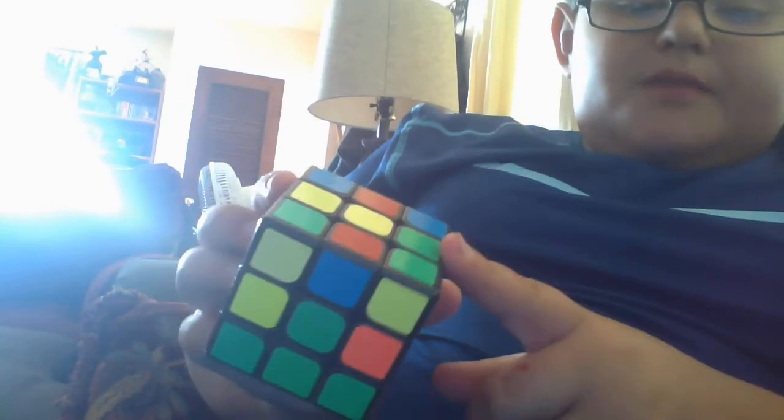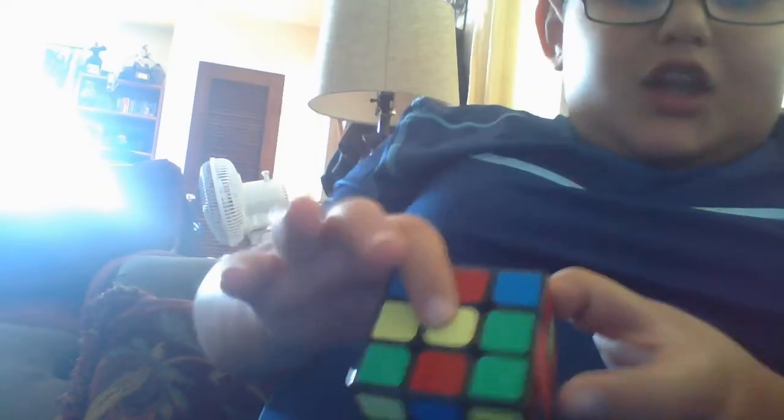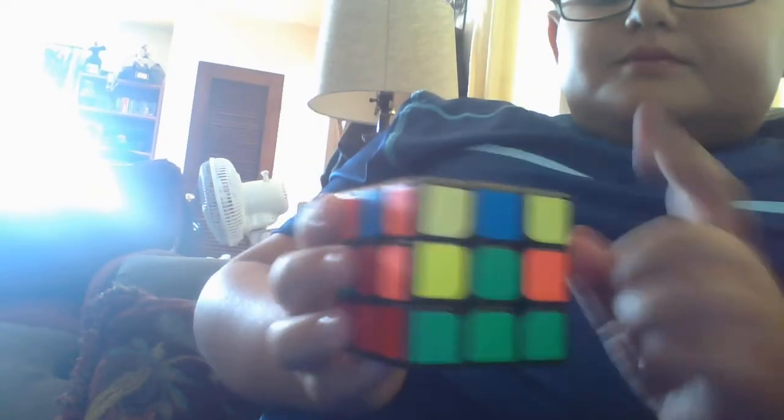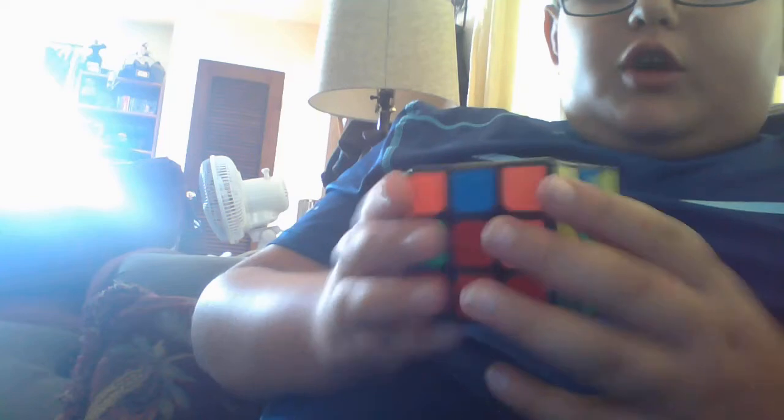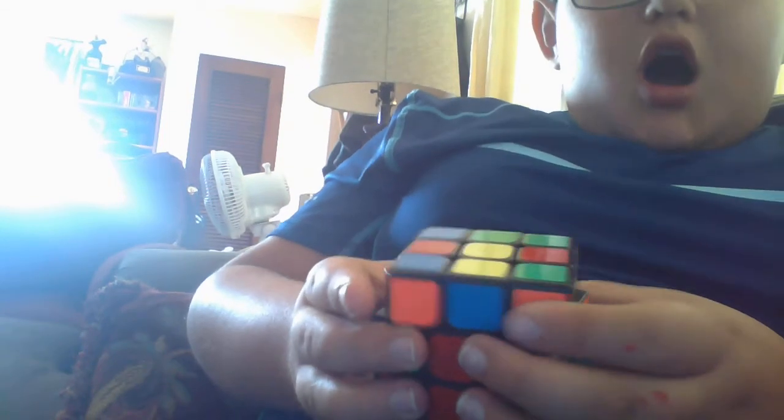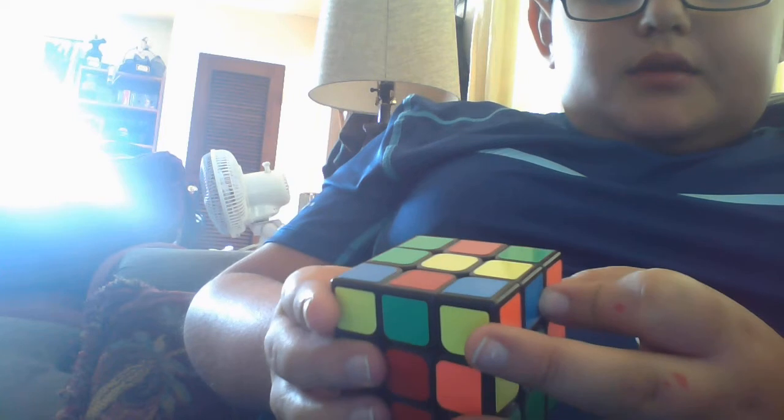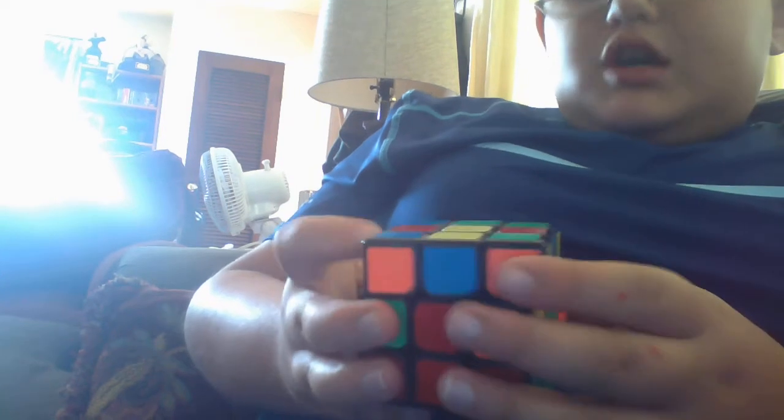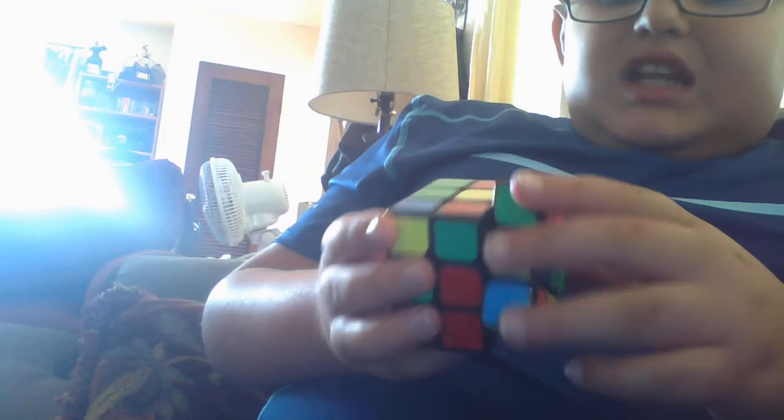So, see this piece right here? You have to find a piece, an edge piece, that has no yellow on it. So, this is the green and orange. And what you want to do is go into the left side. You want to do up inverted. Okay? See? Up inverted.